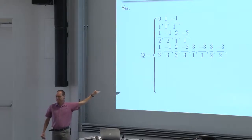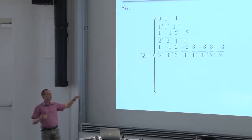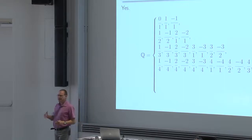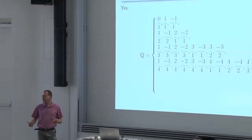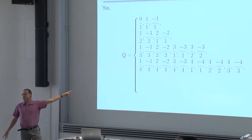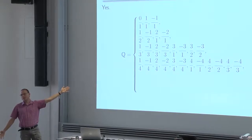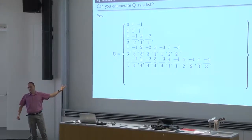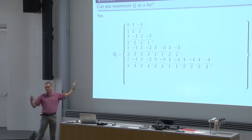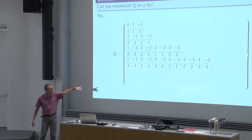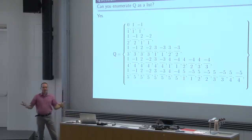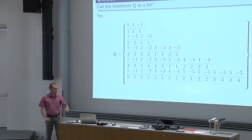Now we have included all the rational numbers that can be written by using only 0, 1, minus 1, 2, minus 2, 3, and minus 3. The next line will be all the rational numbers that can be written using 0, ±1, ±2, ±3, ±4. So I start with 1 quarter, minus 1 quarter. Then 2 quarters — well, it's already in the list, so you can erase it. All that matters is that every rational eventually makes it to the list. And then you go with up to ±5, 5 first in the denominator, 5 in the numerator, and so on.